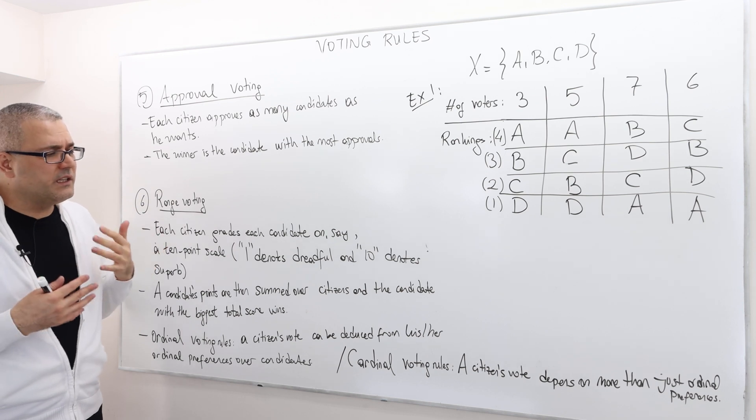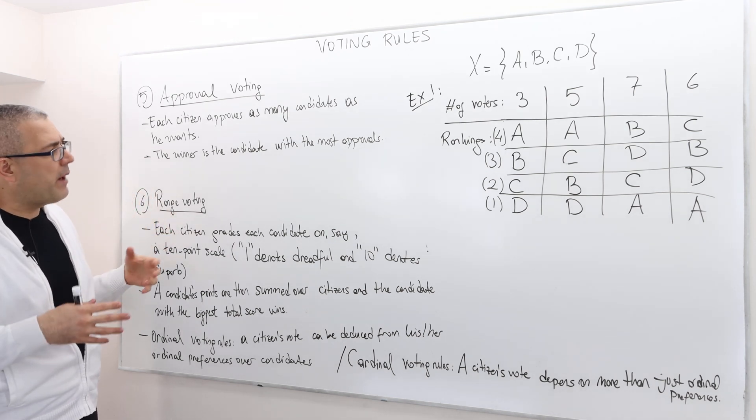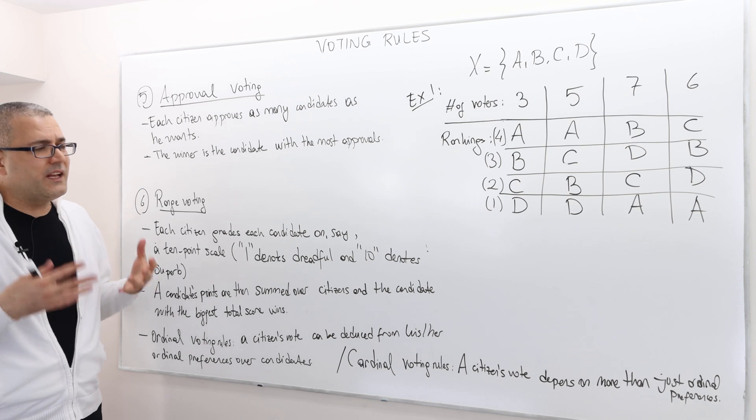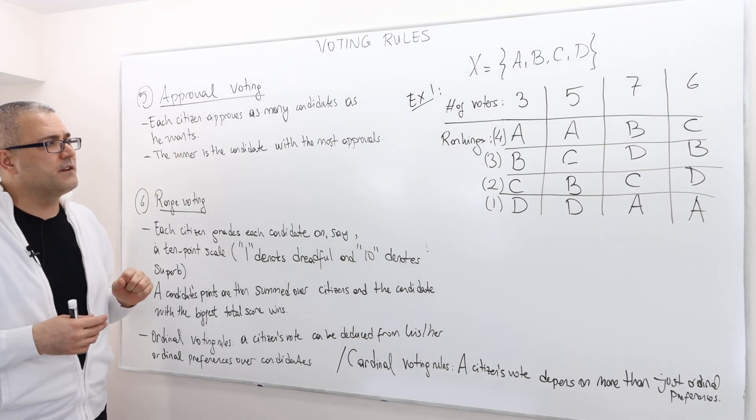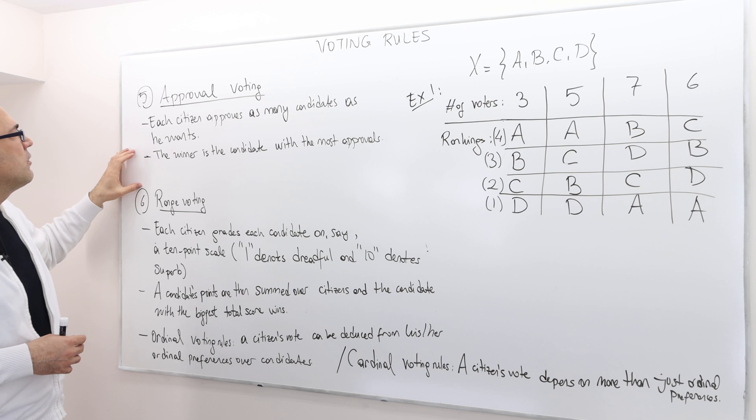I just want to finish our investigation or discussion of voting rules with two cardinal voting rules. Well, cardinal in the sense that a citizen's vote depends on more than just the ordinal preferences. So let's look at those closely.